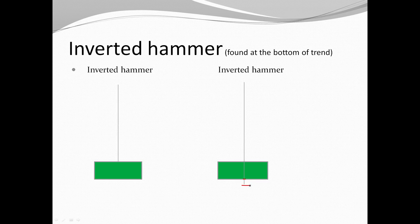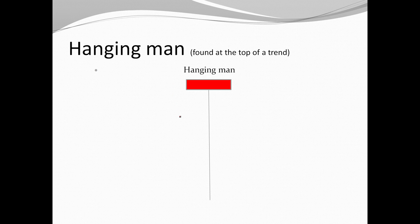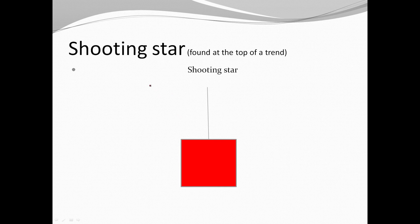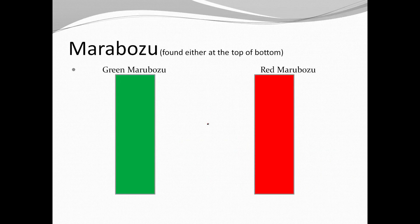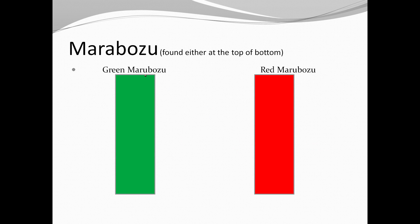A hanging man is found at the top of a chart to signal a trend change. A shooting star is also found at the top of a trend, signaling a trend change. Marubozus can be green or red — a marubozu is basically a solid candle without a wick, or with very little wick.